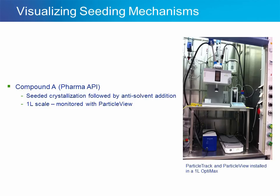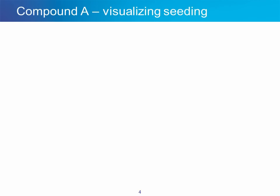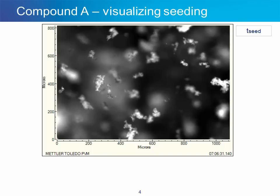In our first example, compound A is crystallized at a 1-liter scale in an OptiMax reactor, and ParticleView with PVM technology is used to visualize the crystallization process using real-time microscopy. This is a seeded crystallization followed by an anti-solvent addition. Here we see one of our first real-time microscopy images collected using ParticleView, and we can actually see what the seed looks like from a microscopic perspective directly in the process.